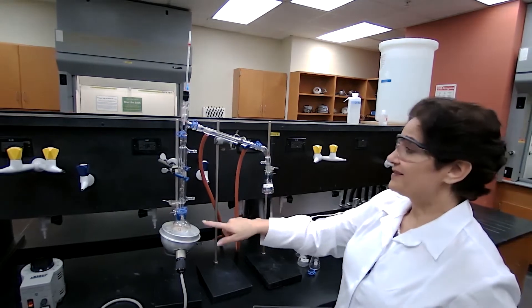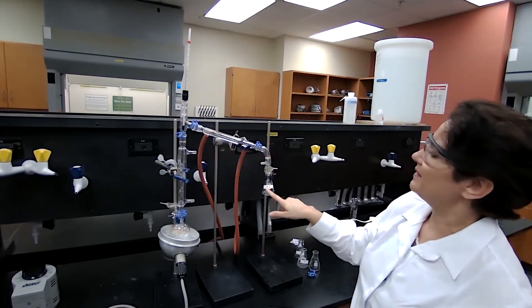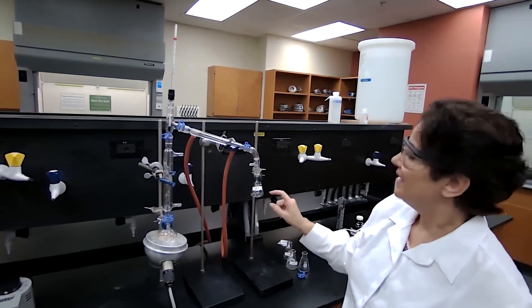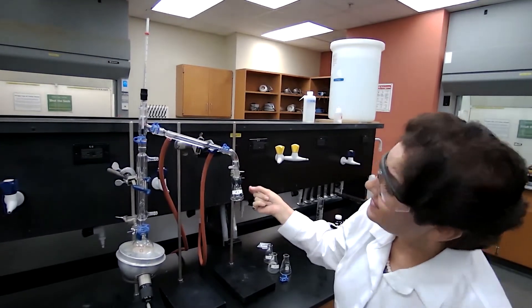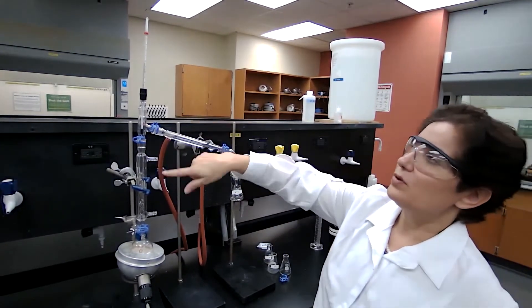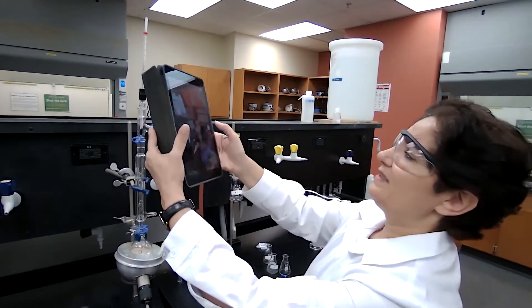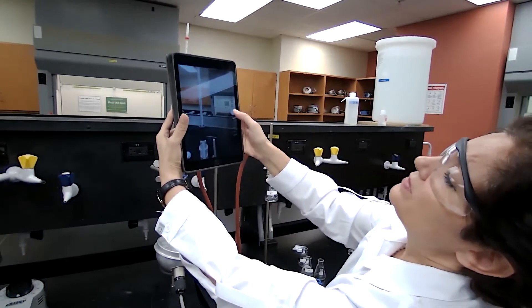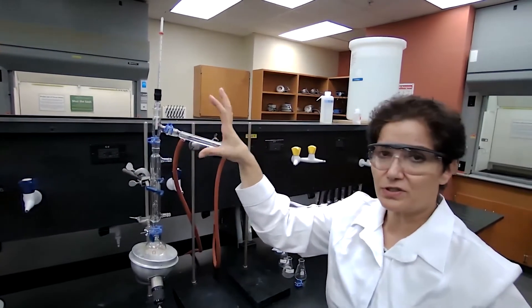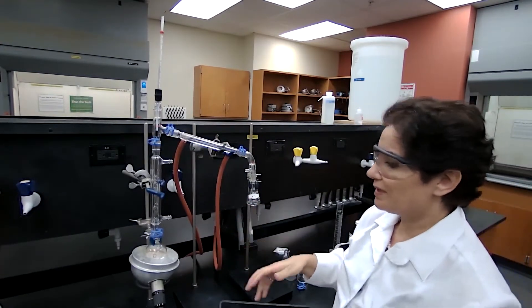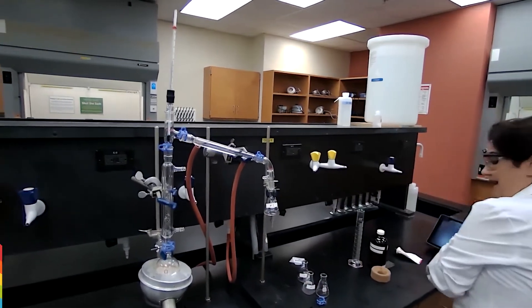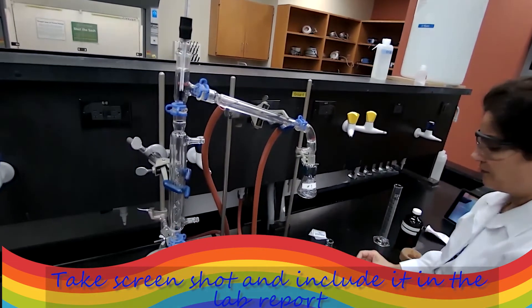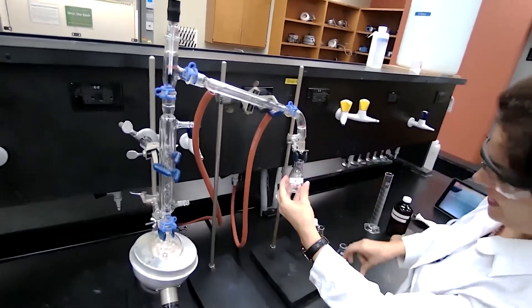Okay. The first distillate is being received now in the fraction one flask. And after the six drops, I'm recording the temperature for the first distillate. I'm taking a still shot to include that in the video so you could actually focus and see the temperature. After the first six drops, I'm going to switch the flask fraction one with fraction two.